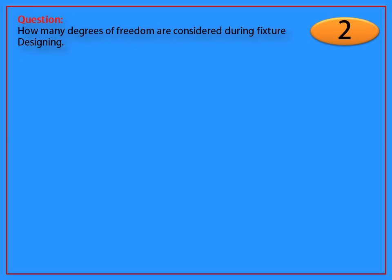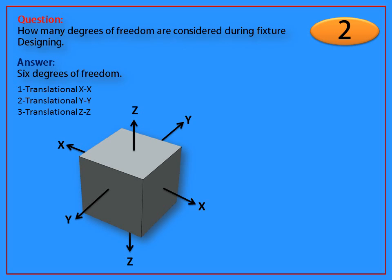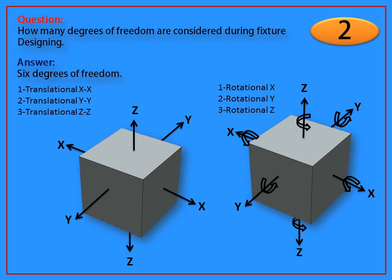Question: How many degrees of freedom are considered during fixture designing? Answer: Six degrees of freedom. Three in translational direction and three in rotational direction.